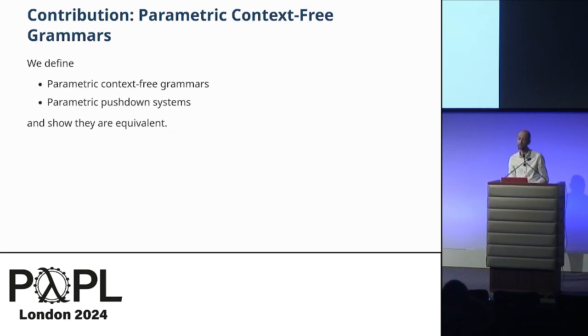The first contribution we did was, let's define the concept of a parametric context-free grammar. Let's be able to use symbolic representations in our context-free languages. We define a context-free grammar and also a notion of parametric pushdown systems, and we show they're equivalent. Here's an example of a parametric context-free grammar. We have the rewrite rules here. We start from S. We can either rewrite to nothing, or we can rewrite to X, followed by S, followed by Y, where X and Y must satisfy this constraint, where X is smaller than the parameter and Y is bigger than the parameter. So we can write things like this.